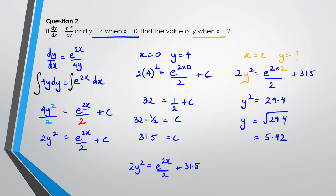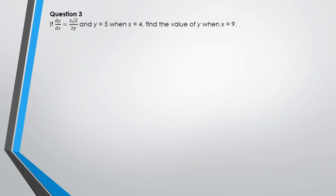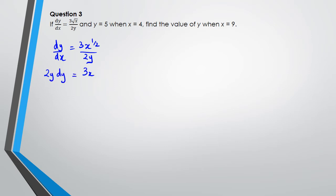Question 3 — the same approach as before. We write dy/dx = 3√x / 2y, rewriting √x as x^(1/2). Cross-multiplying gives 2y·dy = 3x^(1/2)·dx. We then integrate both sides: integrating 2y gives 2y²/2 = y².